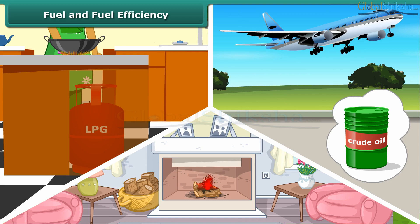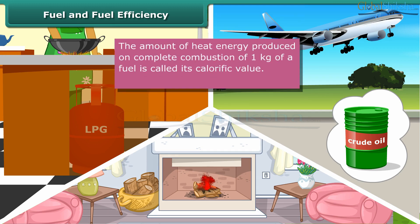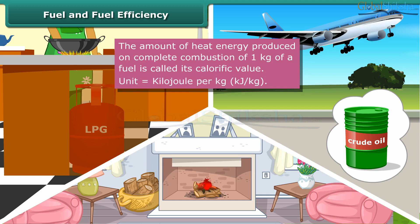All fuels do not burn efficiently. Fuel efficiency is determined by its calorific value. The amount of heat energy produced on complete combustion of 1 kg of a fuel is called its calorific value, and it is expressed in kilojoule per kg. Calorific value of LPG is more than wood or coal, which is why LPG is a more efficient fuel than wood or coal.